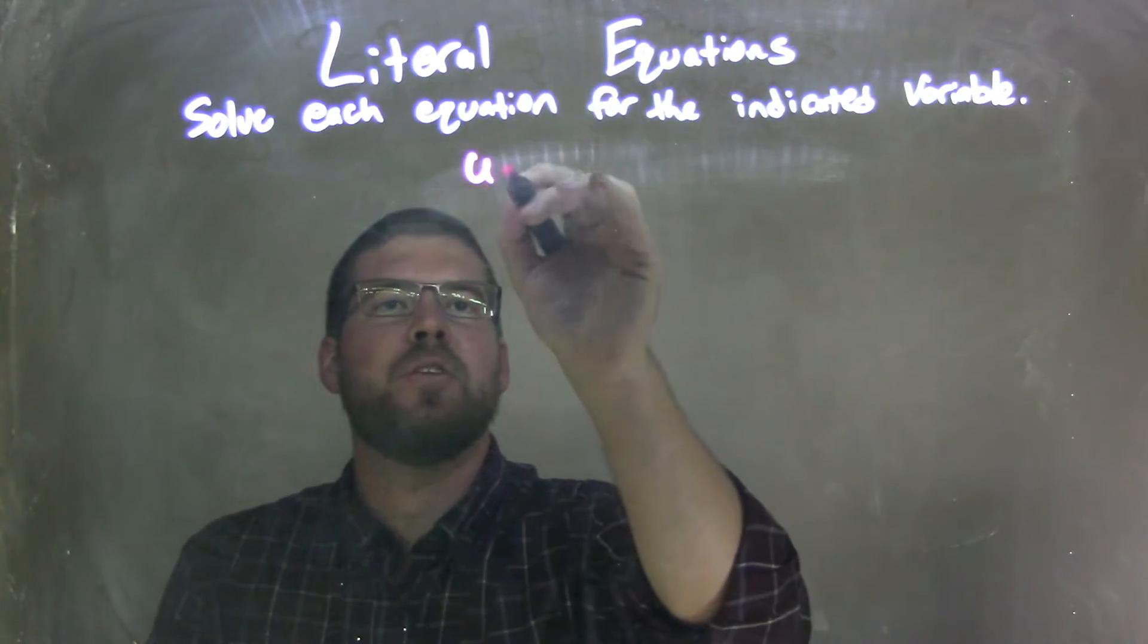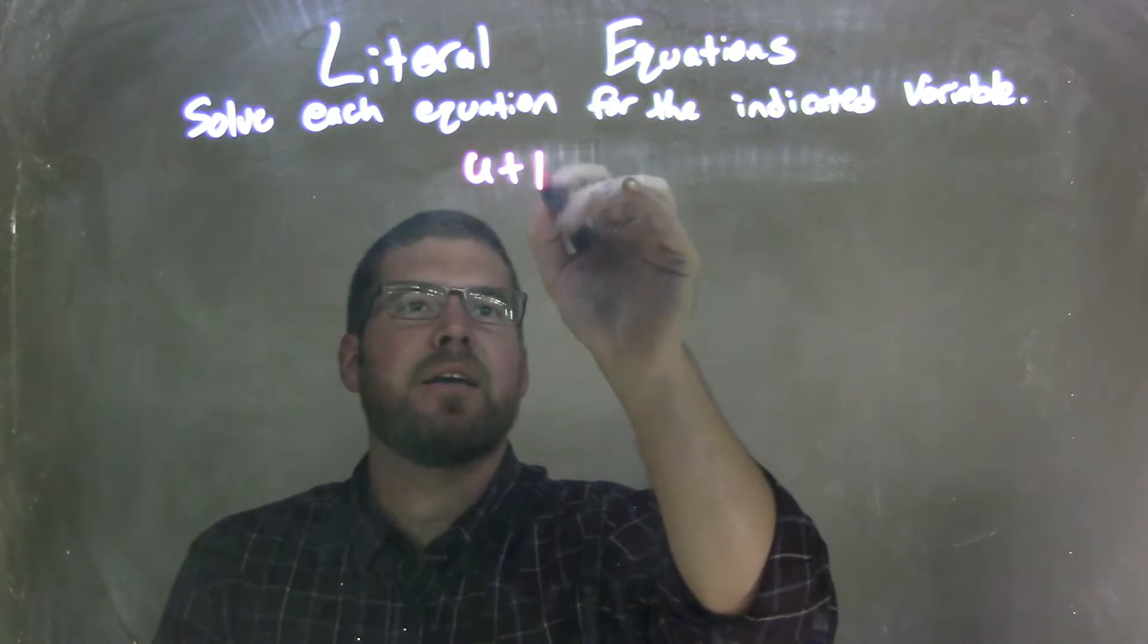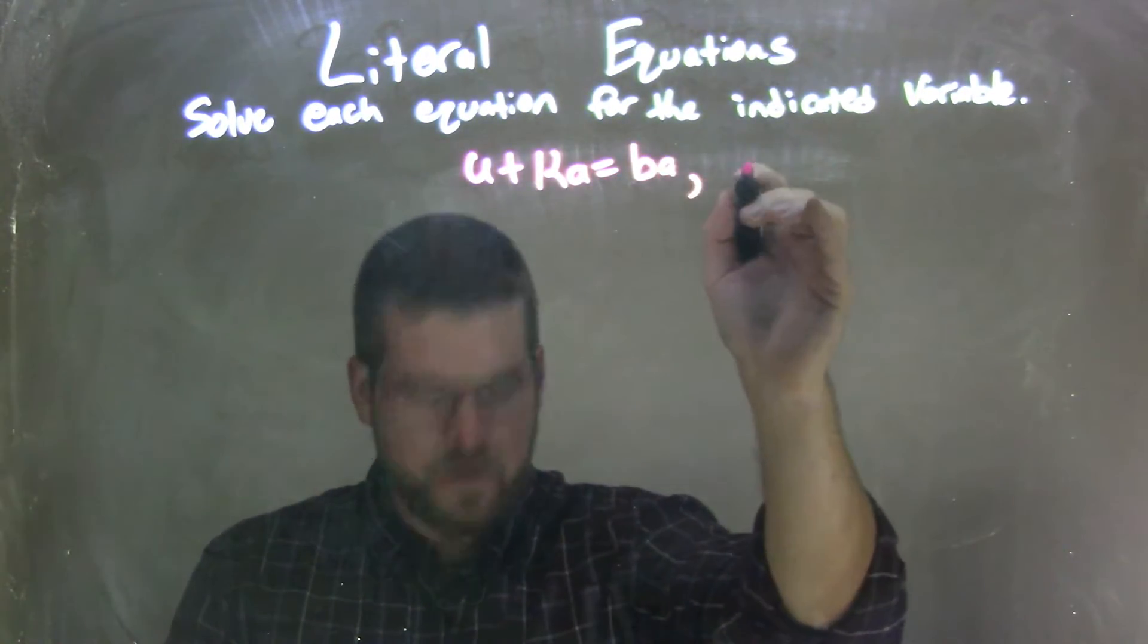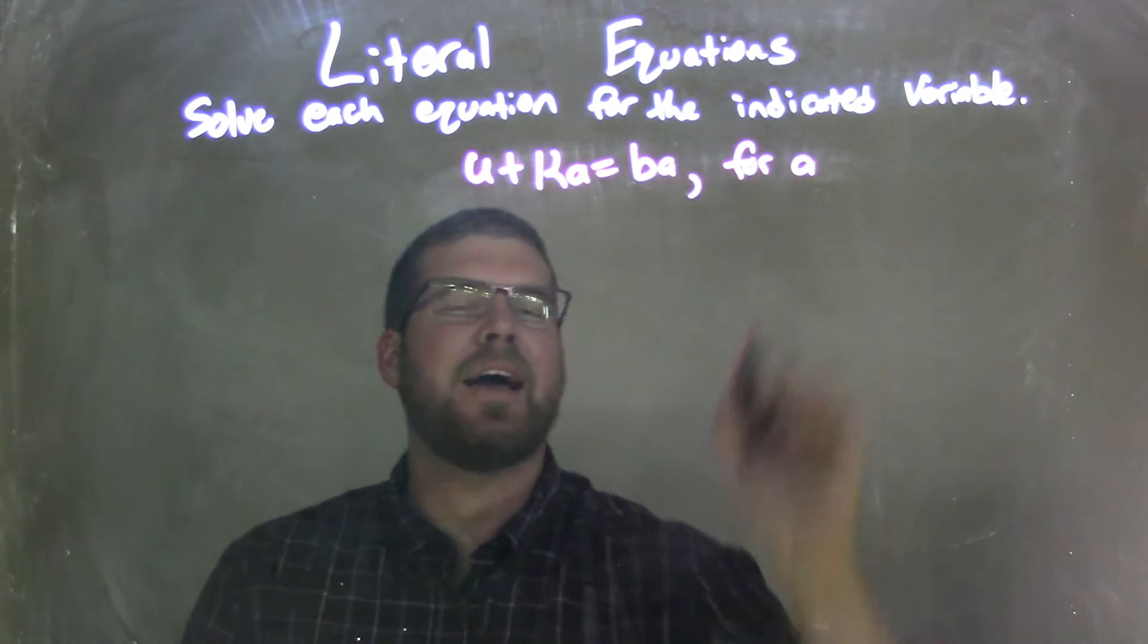So if I was given this equation, u plus ka equals ba, and we're solving that for a.